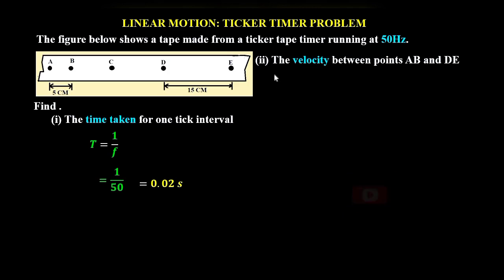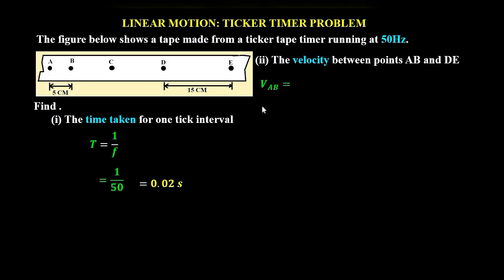For part two, we are required to get the velocity between points A-B and D-E. The velocity between A and B is displacement over time. The displacement is 5 centimeters, which is 0.05 meters, divided by the time interval of 0.02 seconds between dots A and B. That gives us 2.5 meters per second.